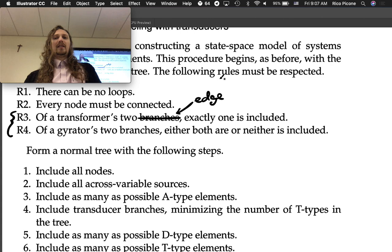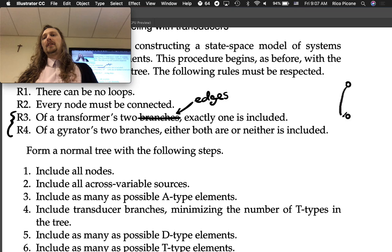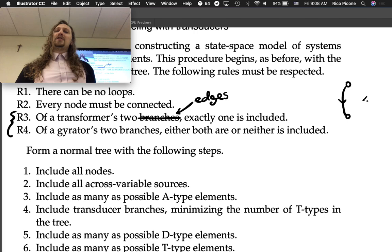The terminology used to be a little bit fuzzy, and now I'm going to try to tighten it up. What's the difference? An edge is... in a graph you have nodes, you have edges. Edges are the lines that represent elements. A branch is an edge that's in the normal tree. That's what we're trying to really precisely use that term. Sometimes we loosely call edges branches, but that's not what we want to do. We want to keep it more precise than that.